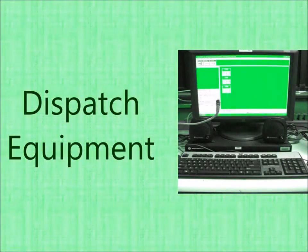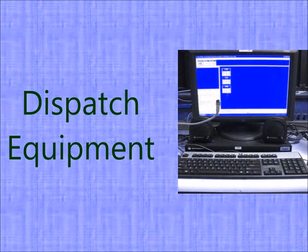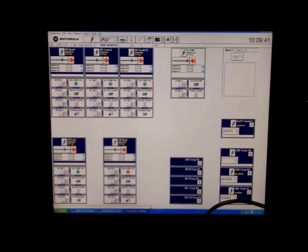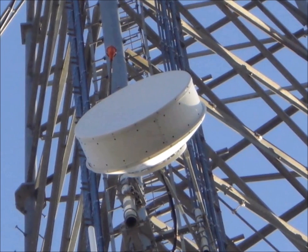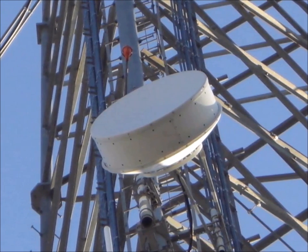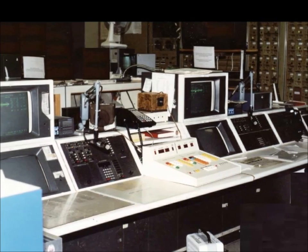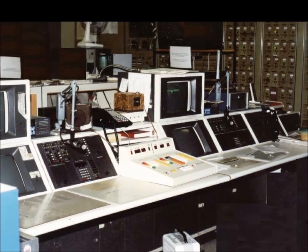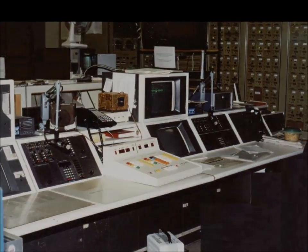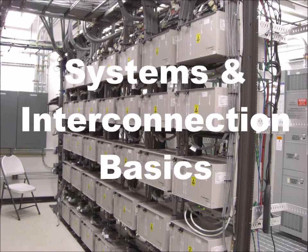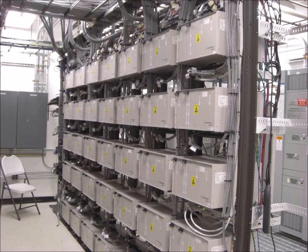Dispatcher equipment is the user interface to the infrastructure equipment. Whether the connections are circuit-based, IP-based, or connected by some other method, the dispatch equipment at the most basic level transforms electronic signals into audio and visual indications that can be used by a dispatcher. Let's review some system and interconnection basics that will help you understand the various interconnections that connect your system or systems.